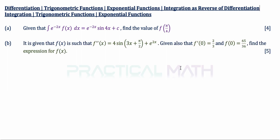In part B of this question, it is given that f double prime of x is equal to 4 sin(3x + π/2) plus e to the power of 2x. Given also that f prime of 0 is equal to 2/3 and f of 0 is equal to 65 over 36, you are to find the expression for f of x. That is the 5-mark question.